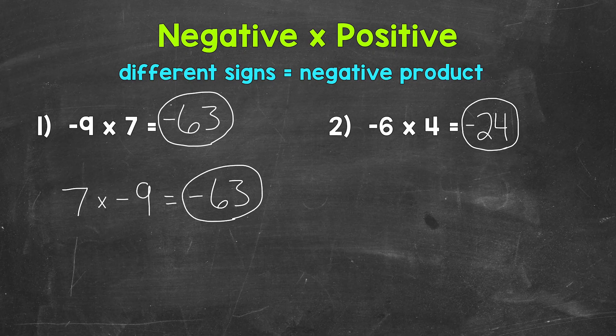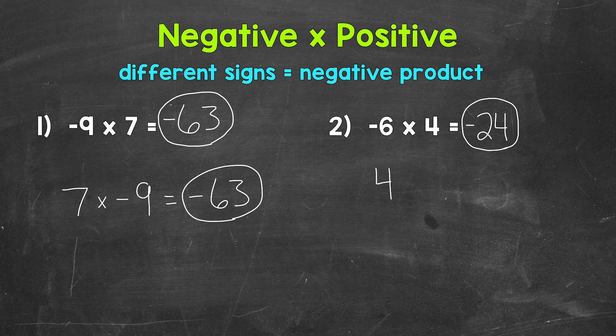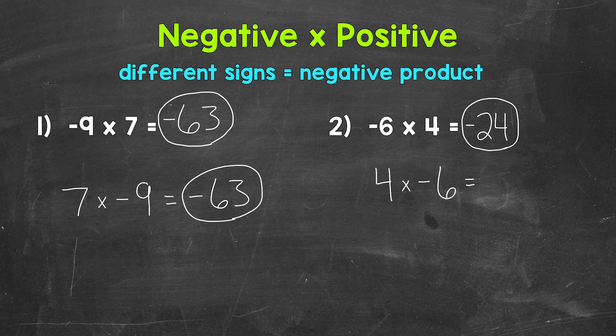We can also use the commutative property. So switch the order here. 4 times negative 6. So 4 groups of negative 6. Negative 6 plus negative 6 plus negative 6 plus negative 6. And that gets us to negative 24 as well.